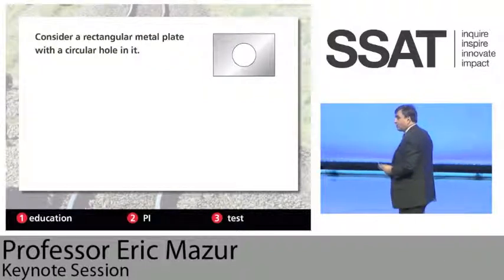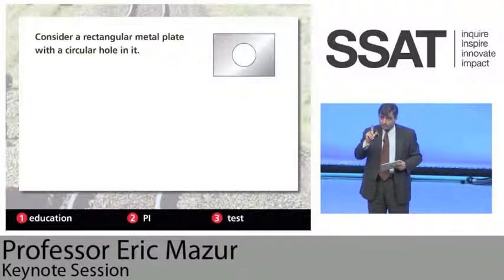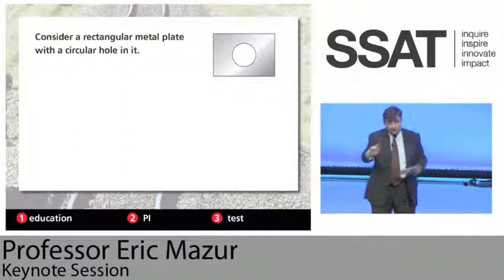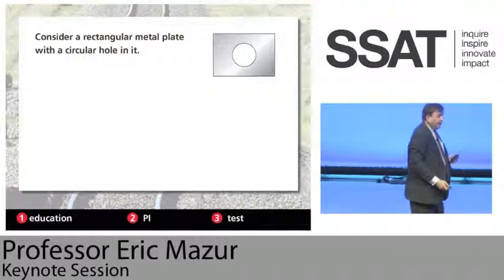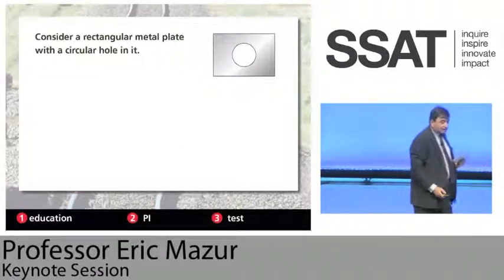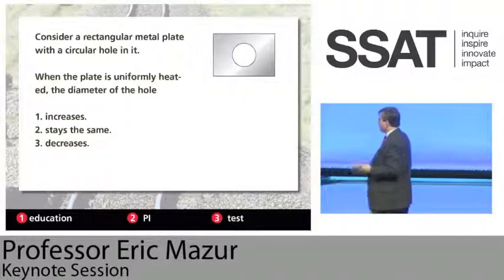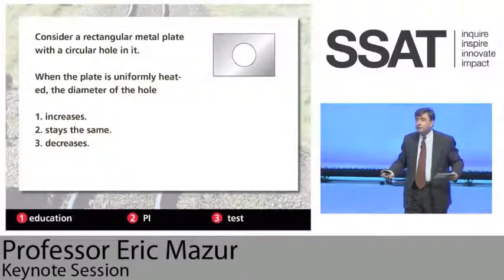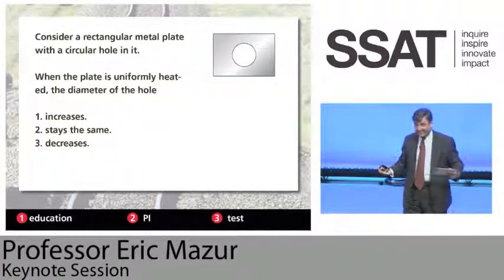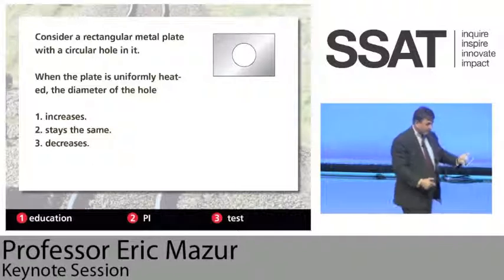Here's the question: consider a rectangular metal plate with a circular hole in it. There's not going to be any talking — you first work on it individually. If you start talking I'll run to you with the microphone and you'll have to talk in front of everybody. When the plate is uniformly heated, the diameter of the hole: one — increases, two — stays the same, three — decreases. Twenty people have already answered. Please think about atoms getting further away from one another. Take your time and then enter your answer.